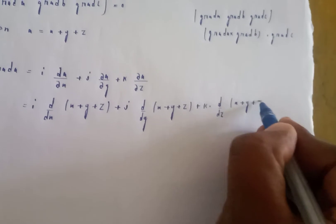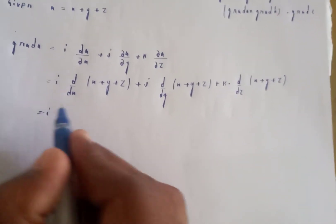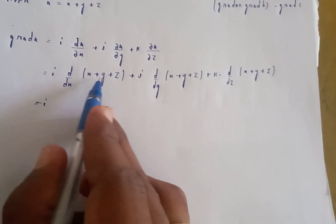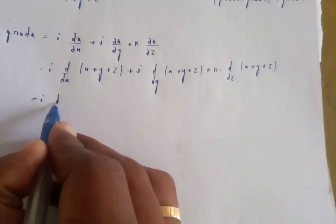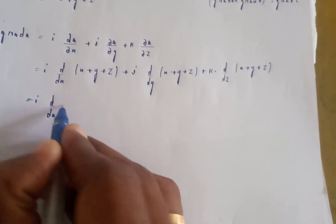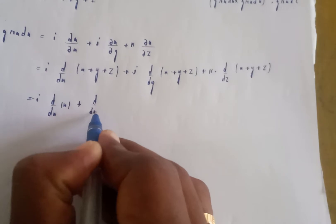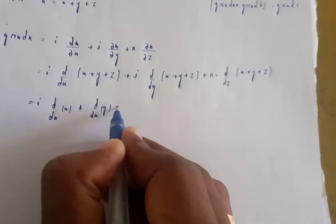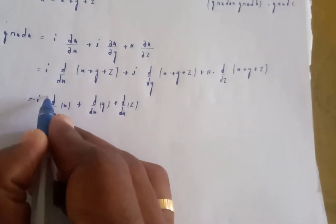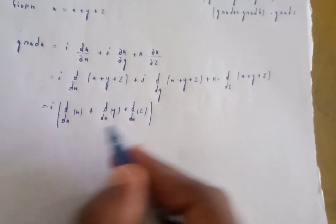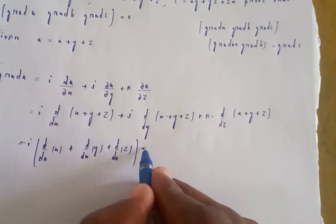Plus k of d by dz of (x plus y plus z). With respect to x, y and z are constant, so they become 0. With respect to x: d by dx of x is 1, d by dx of y is 0, d by dx of z is 0. This is partial differentiation.